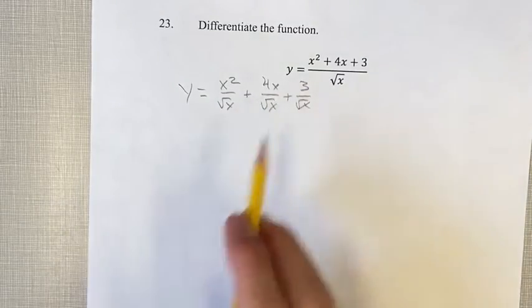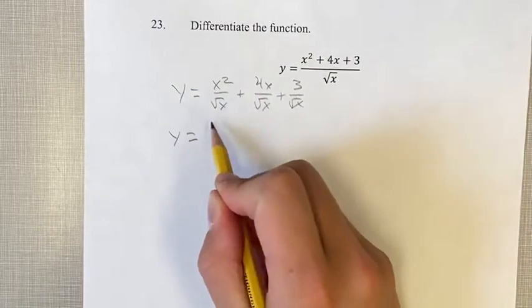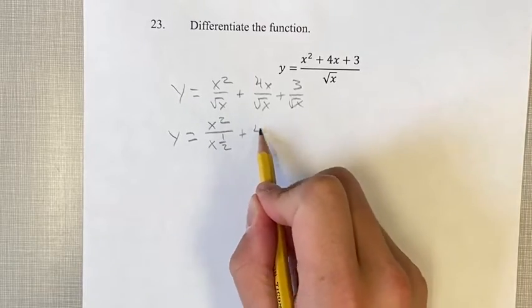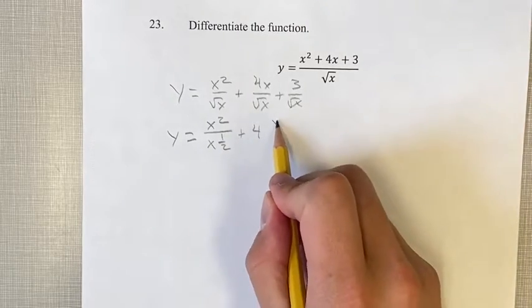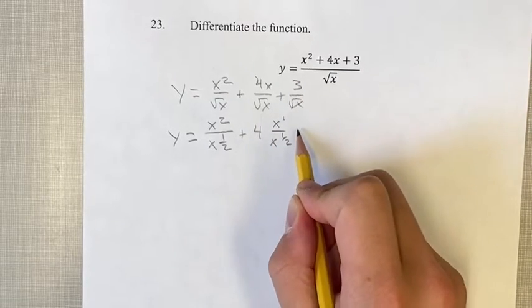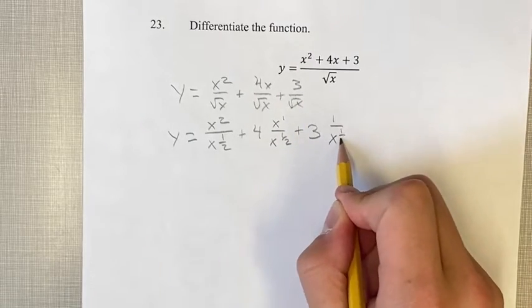We're going to get these all into power functions. Remember that root x is x to the 1 half. We can write this as x squared over x to the 1 half plus, put the 4 out in front, x to the 1 over x to the 1 half plus 3, and then this is just 1 over x to the 1 half.